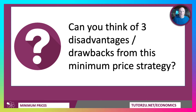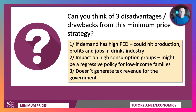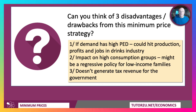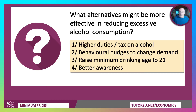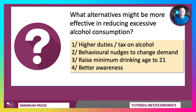Can you think of three disadvantages or drawbacks from this minimum price strategy? One is that if the product has high elasticity and sales go down, output gets hit, and that can hit production, profits, and jobs in the drinks industry. The impact on high-consumption groups might be regressive if you set a very high minimum price, particularly for low-income families. And in comparison with an indirect tax, a minimum unit price does not generate tax revenue for the government, although retailers might make more money, so you might get more corporation tax. Alternatives might include higher taxes, behavioural nudges, changing the legal drinking age, or increased government spending on alcohol addiction education services.